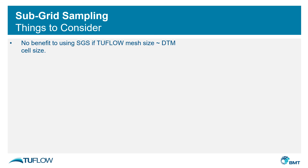When using subgrid sampling in your models there are a couple of things to consider. Firstly, there is no benefit to using subgrid sampling if the TwoFlow mesh size is similar to the DTM cell size, as the mesh is already picking up the large majority of the topographic detail. However, if the grid size is greater than the resolution of the DTM, then any topographic features — whether open channels, embankments, or buildings — if present within the DTM they will be represented within the hydraulic model regardless of the grid size.